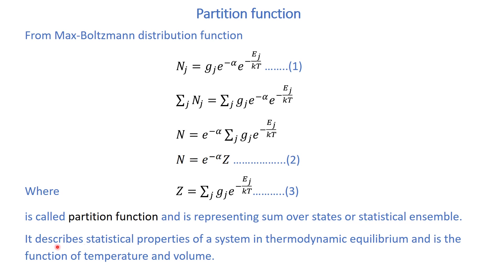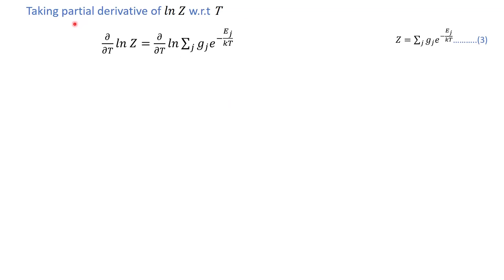It describes the statistical properties of a system in thermodynamic equilibrium and is a function of temperature and volume. Now let us take the partial derivative of log Z with respect to T. Z is already given by the previous relation, so if we take the partial derivative of log Z with respect to T, we get this equation.